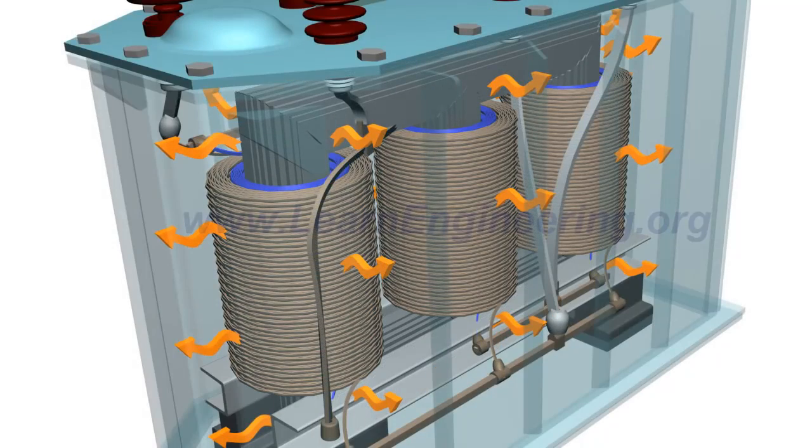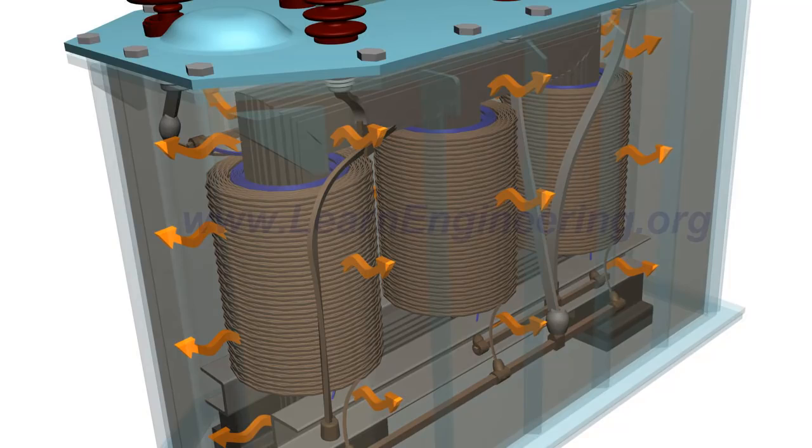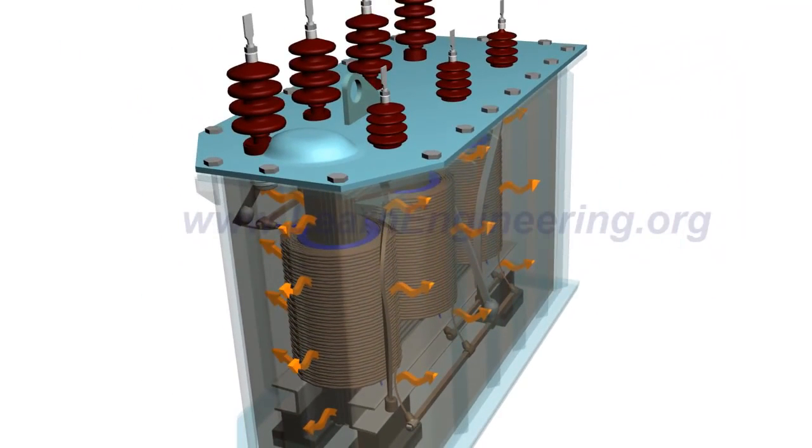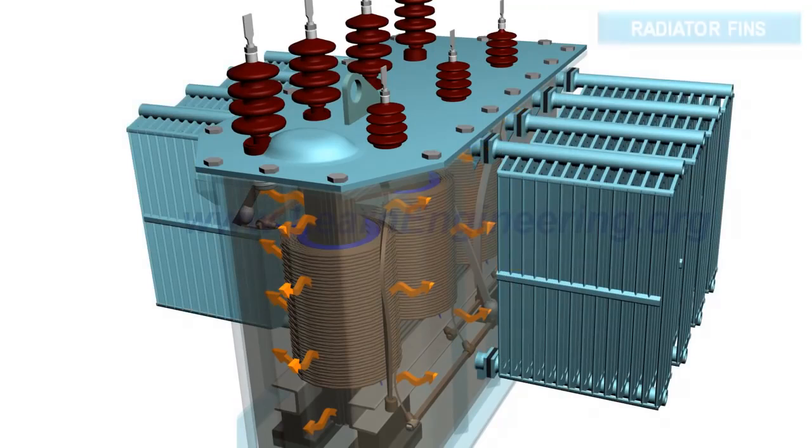So, usually the transformer is immersed in cooling oil to dissipate the heat. The oil dissipates the heat via natural convection.